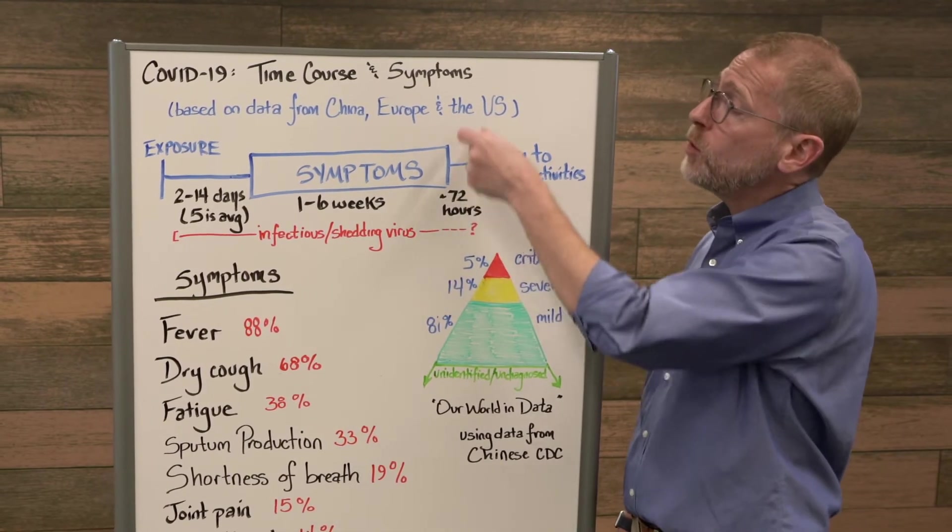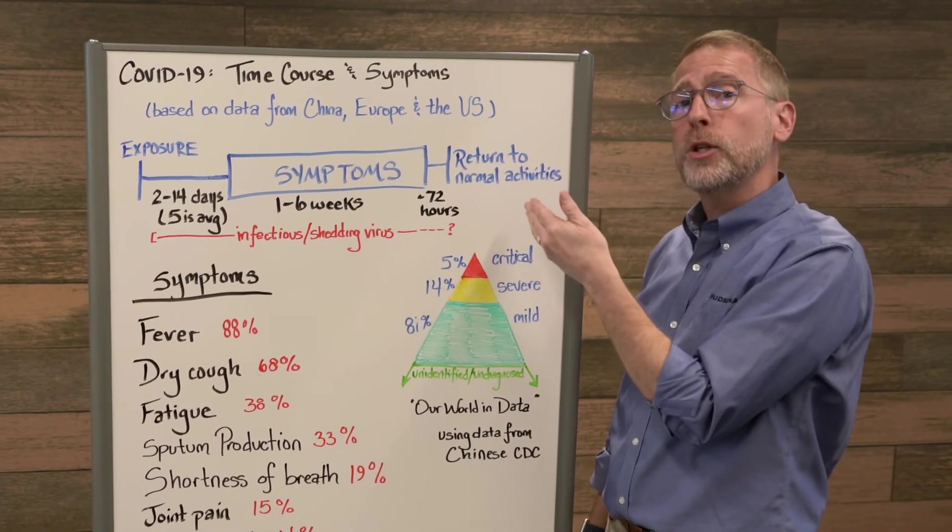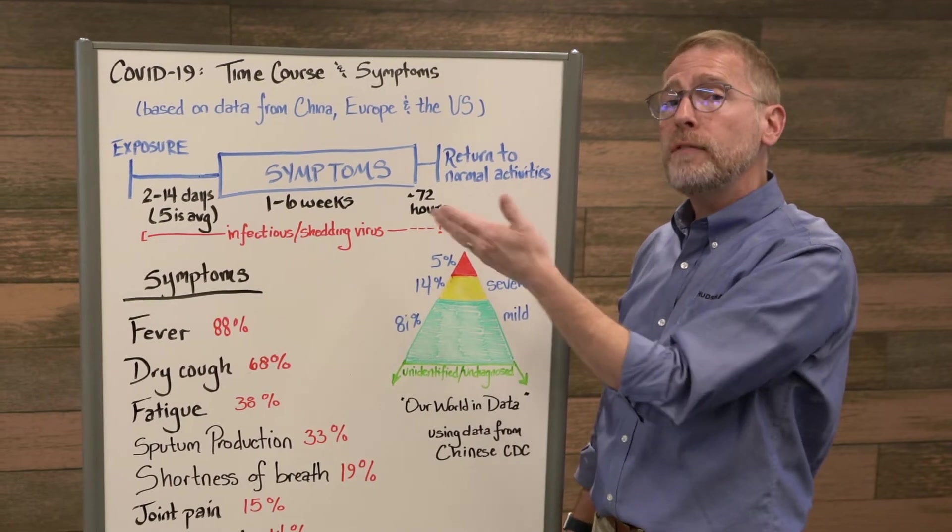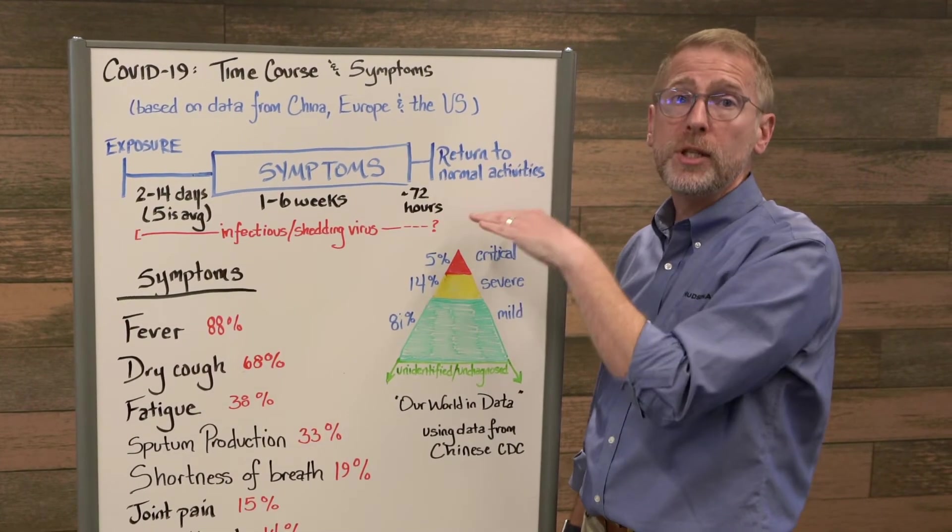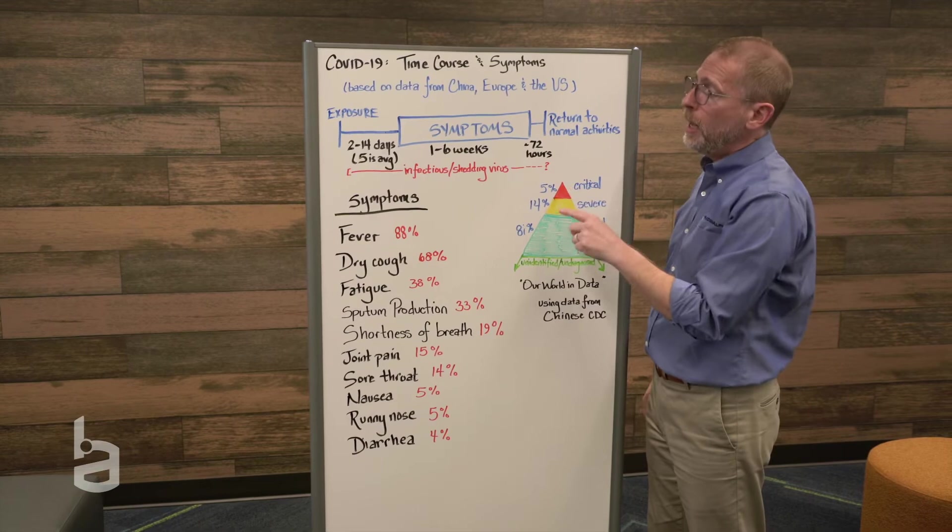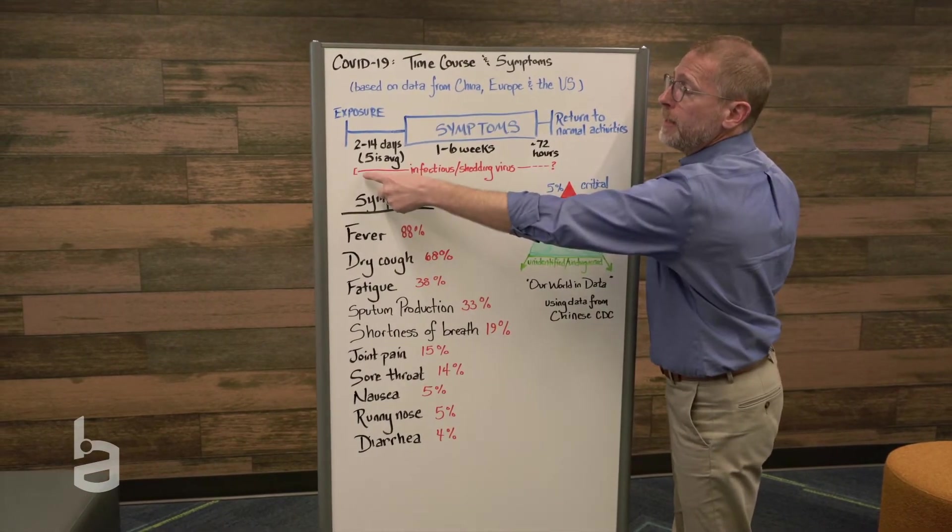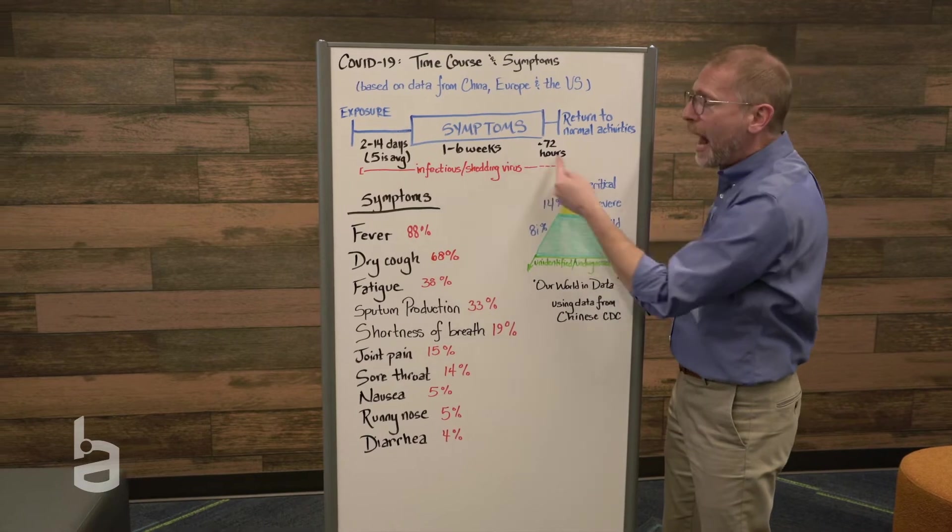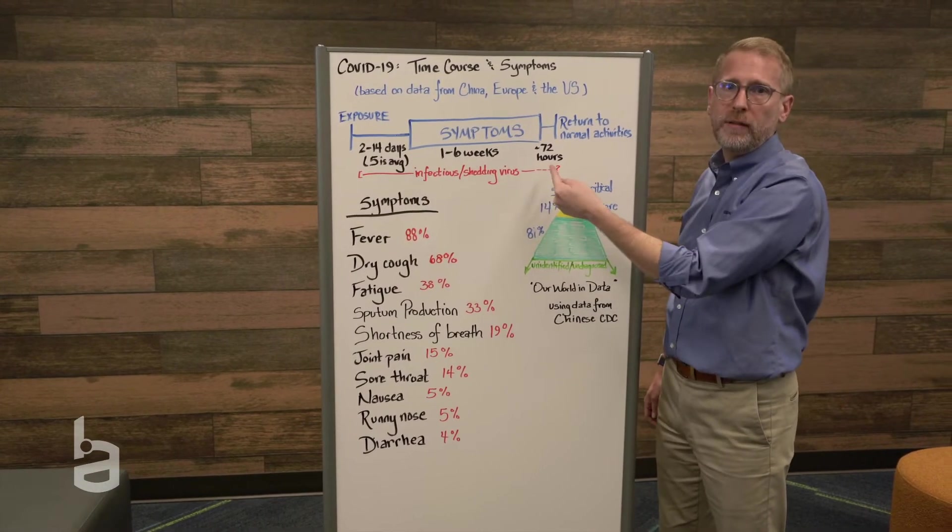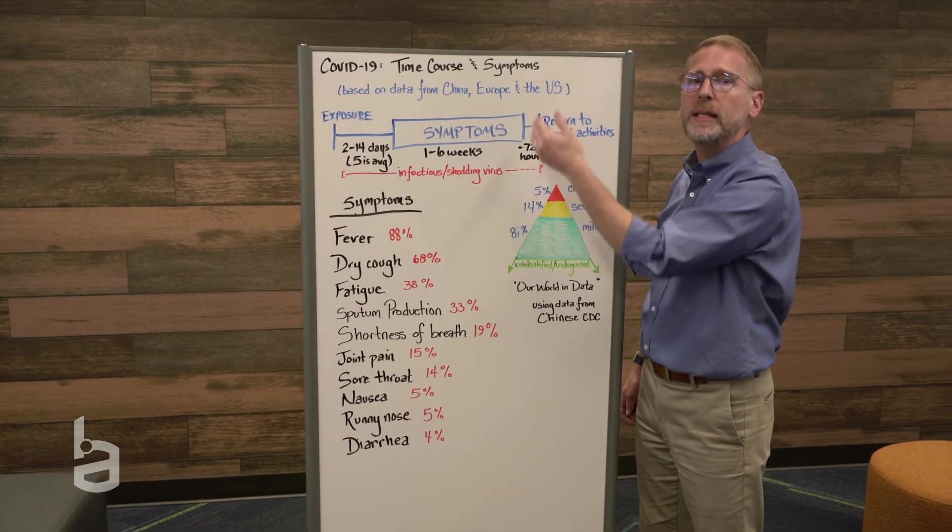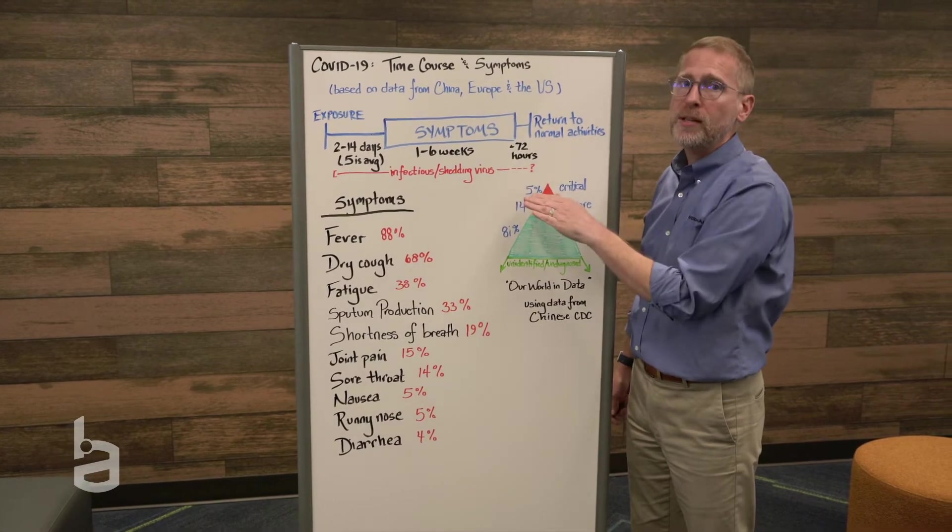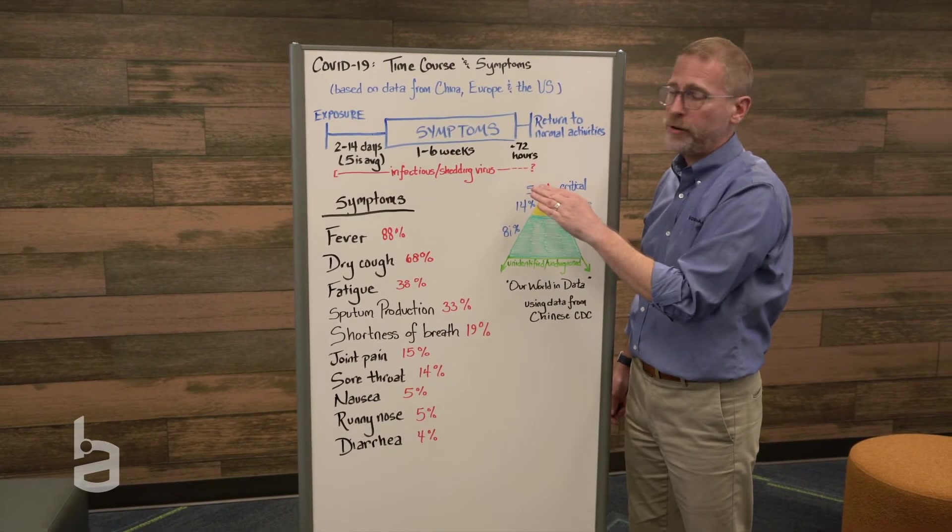And then you've got this window of time at the end of symptoms before you actually return back to your normal activities, 72 hours of fever-free and a reduction in your symptoms. We know that you are infectious early on. As I said a minute ago, we aren't sure how long in this process you're still infectious, although the data suggests that at 10 days after the start of symptoms, you've pretty drastically dropped the amount of virus you're sharing.